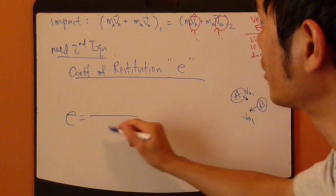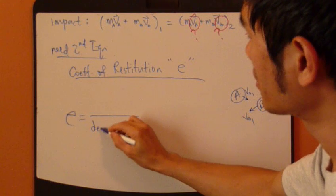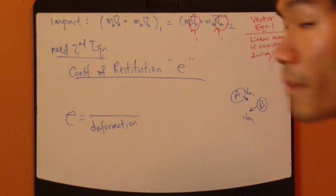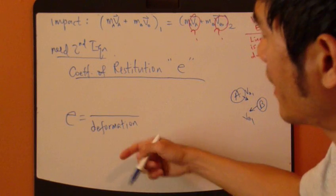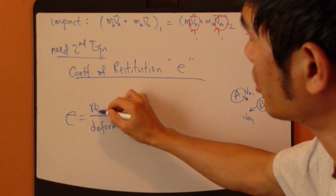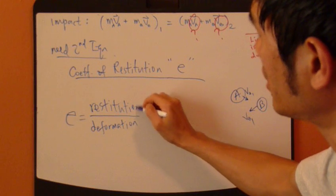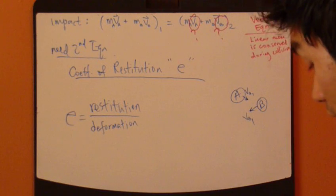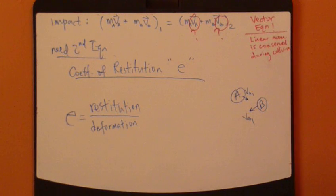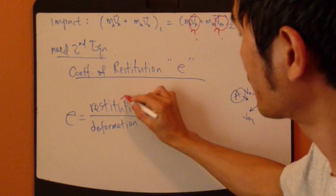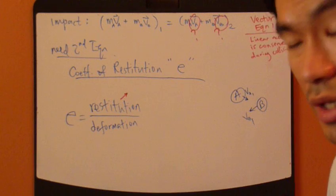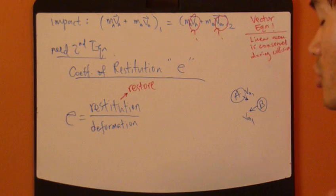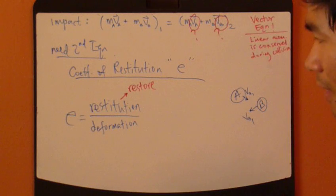It's the ratio of deformation in the denominator and something called restitution in the numerator. So it's restitution versus deformation. Restitution means restore, restoration. Restoration of what? Restoration of energy.